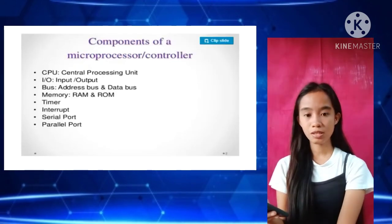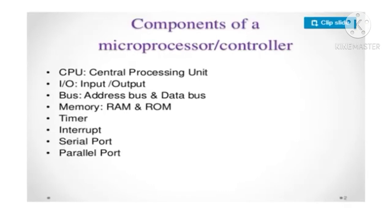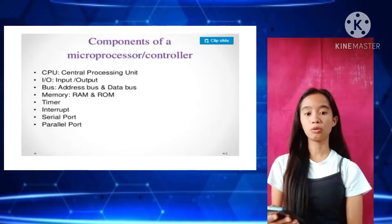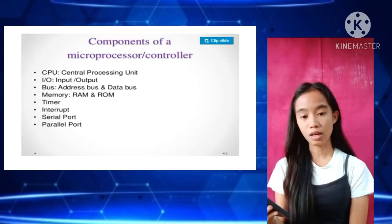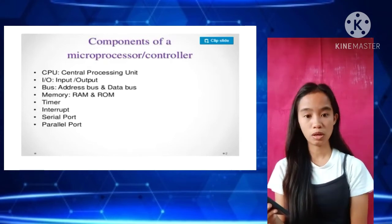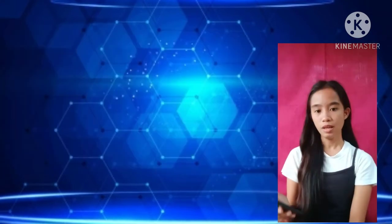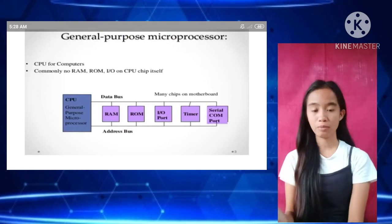The components of microprocessor and microcontroller include the CPU (Central Processing Unit), I/O (Input/Output), bus — which includes address bus and data bus — memory with RAM and ROM, timer, interrupt, serial port, and parallel port. As IT students, we are already familiar with these components.